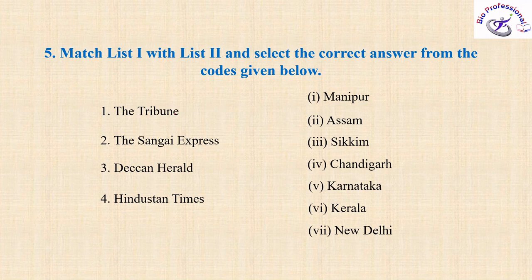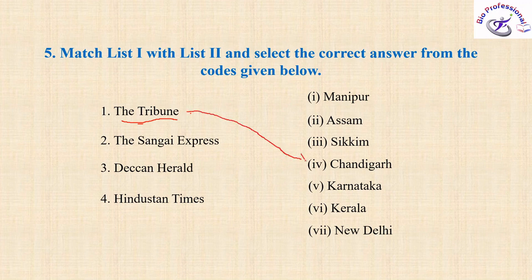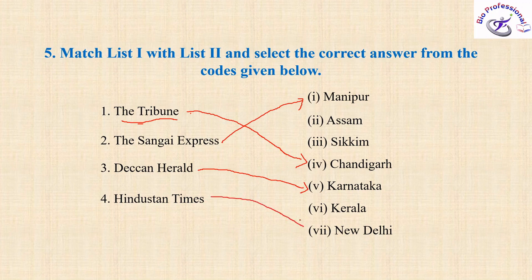The next question is also memory-based, but they have given a trick. See 'The Tribune' — most students will think this is from Assam and mark the wrong answer, but The Tribune is from Chandigarh. The Sangai Express is from Manipur. The Deccan Herald is from Karnataka. And Hindustan Times is from New Delhi. So The Tribune is a twist — it is not from Assam, it's from Chandigarh.